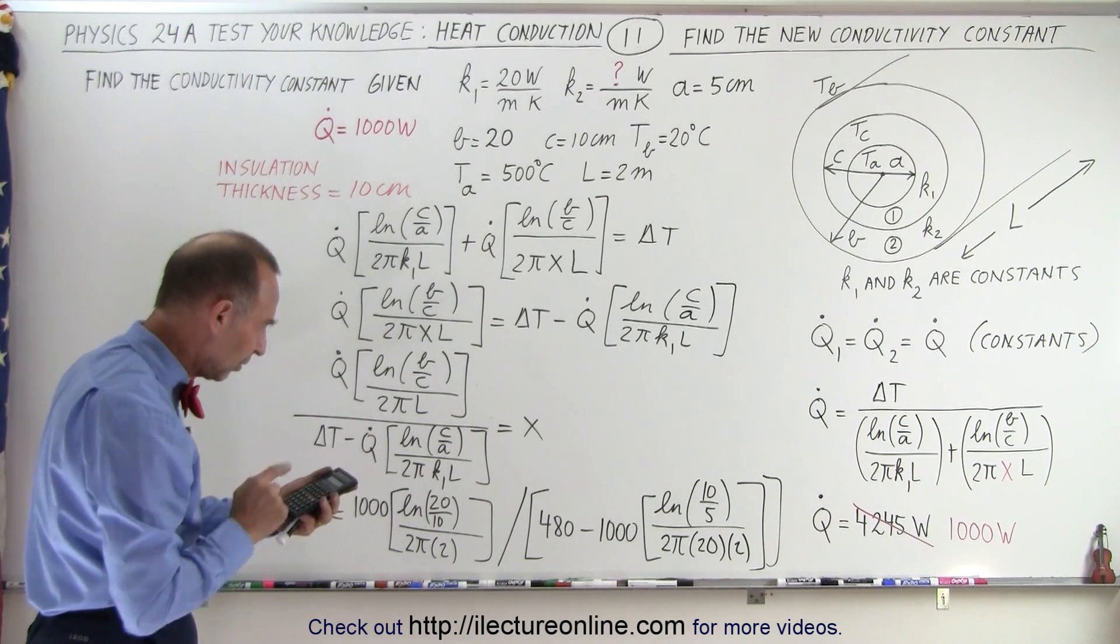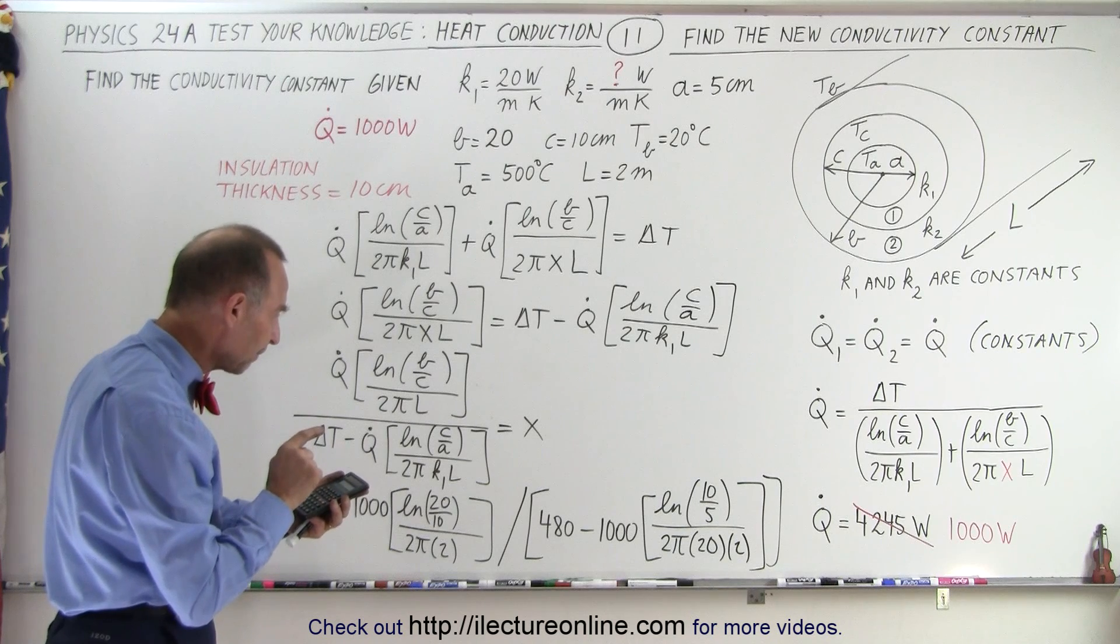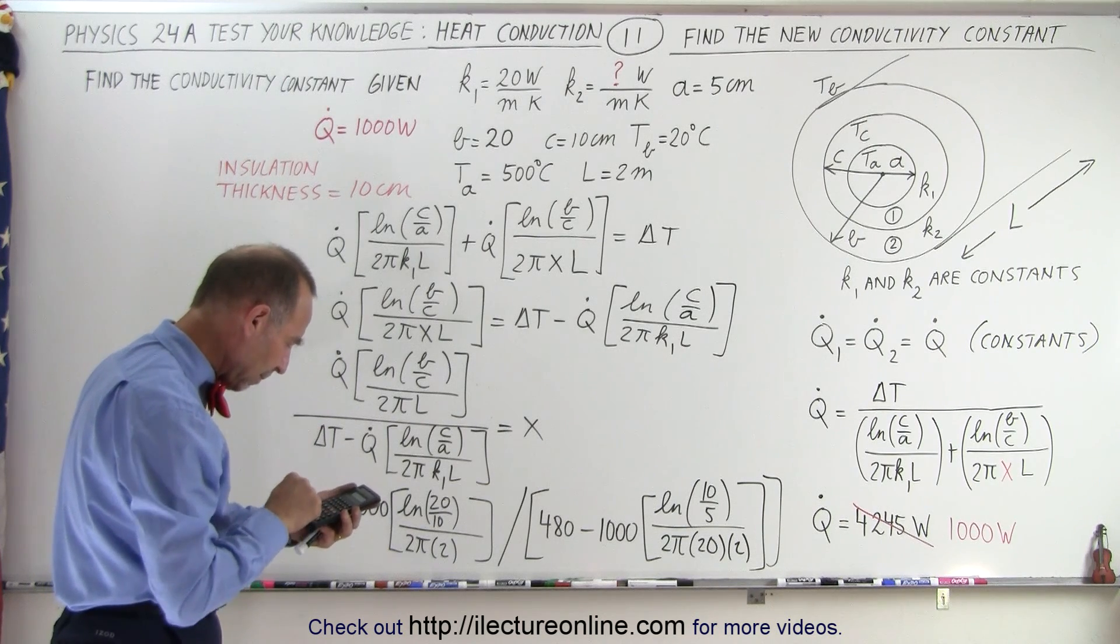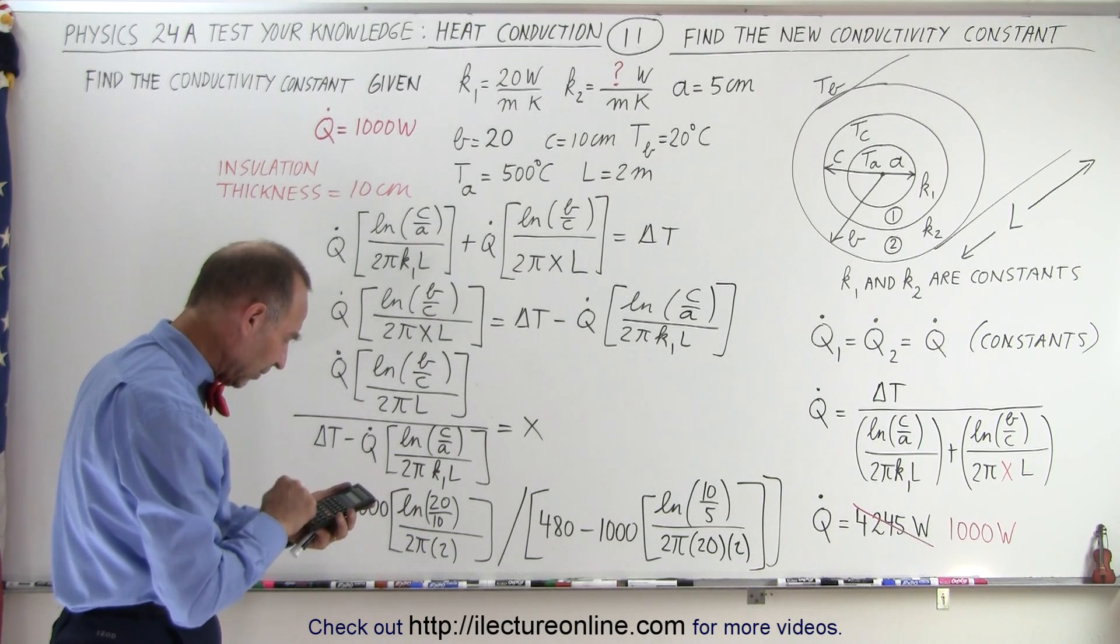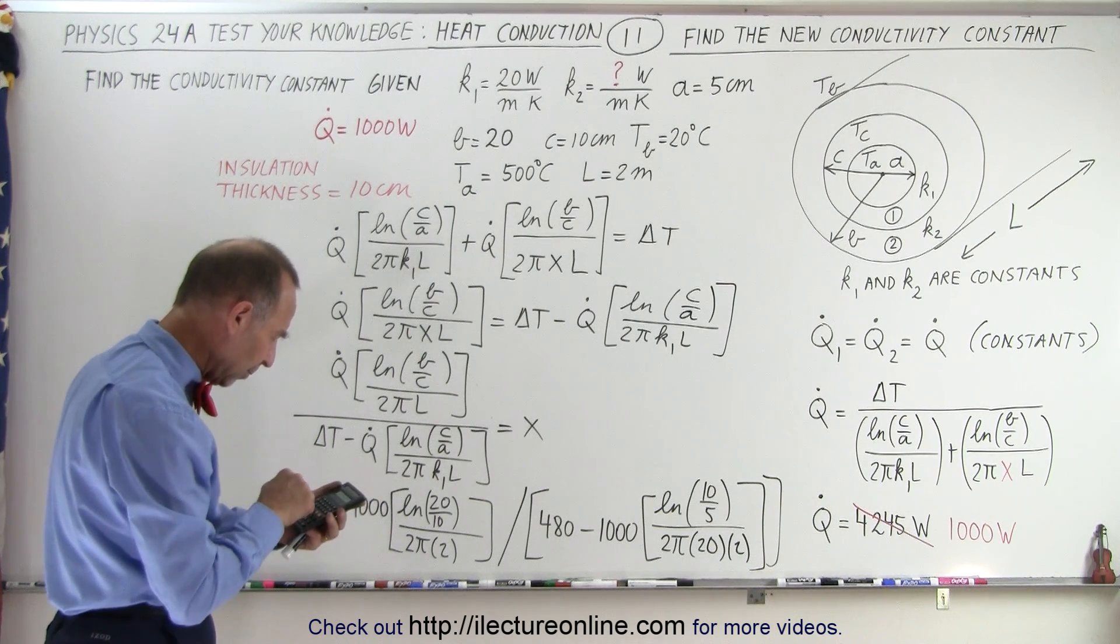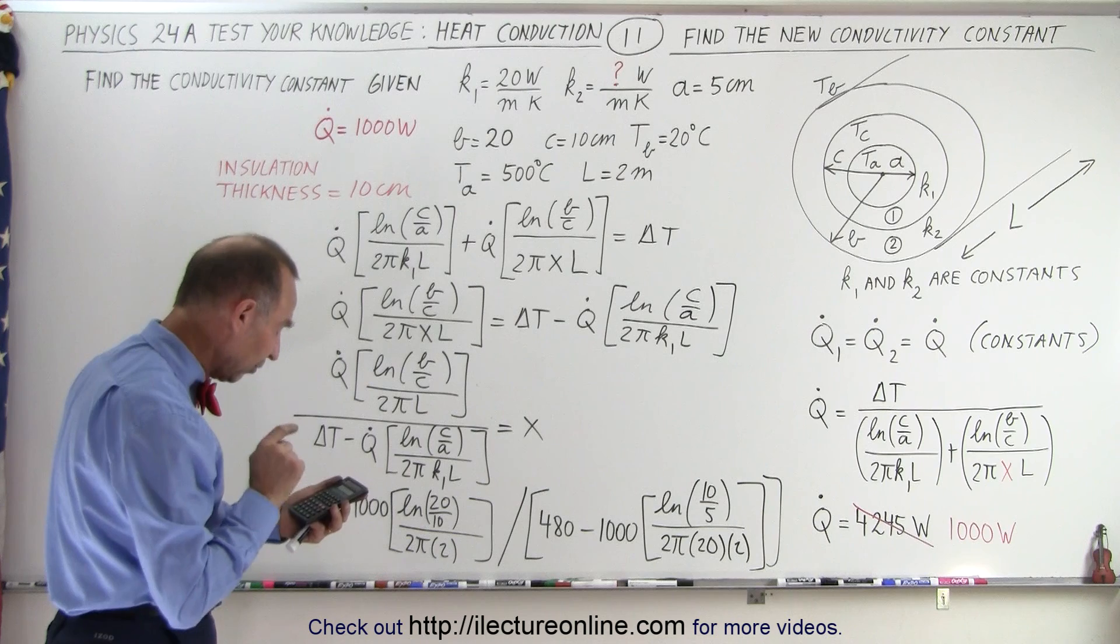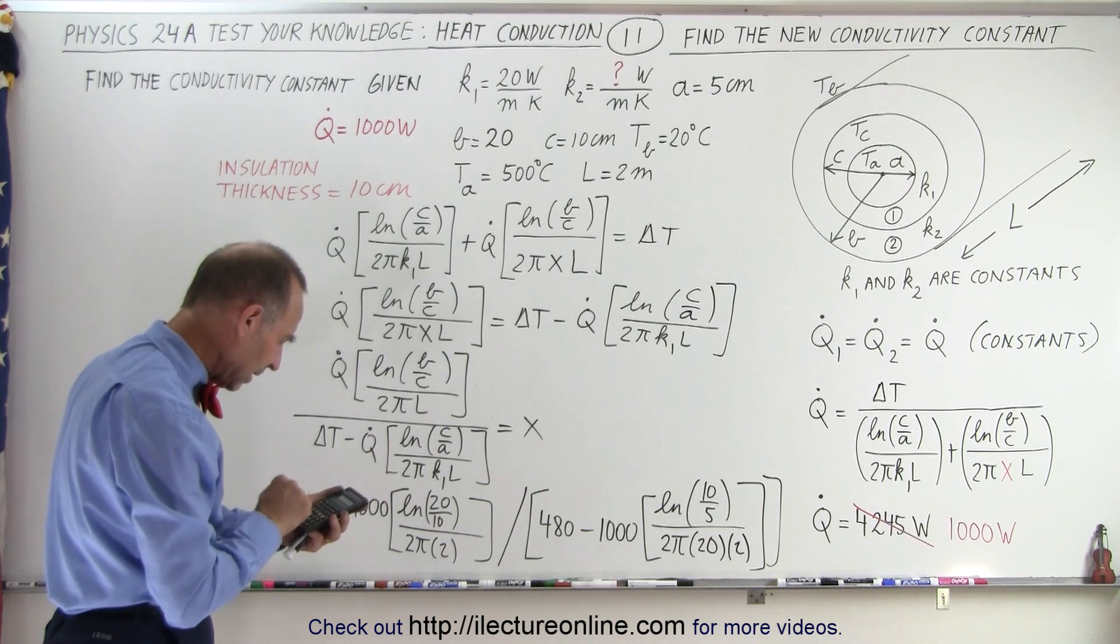Let me try it again, just to make sure. So 2, take the natural log, divide by pi, divide by 80, equals, times 1,000, equals, put a negative sign in front of that, subtract from 480, so plus 480, equals, that's now in the denominator.